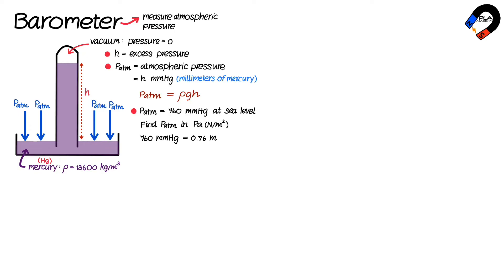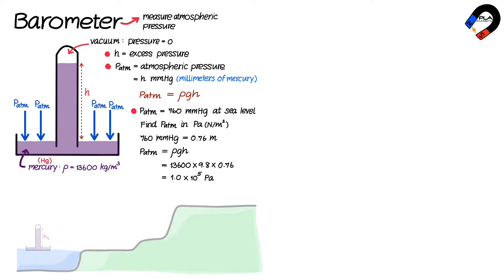Substituting the values ρ = 13,600, g = 9.8, and h = 0.76 into the equation p = ρgh results in p = 1.0 × 10⁵ pascals.